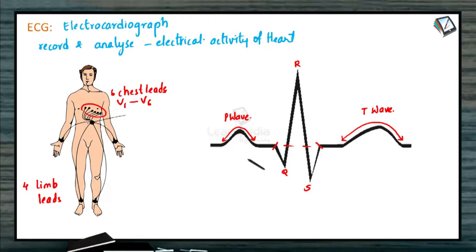So this PR interval, it is from the beginning of the contraction of the atria here and to the beginning of the contraction of the ventricles. So it extends from this region to this region. And it extends from 0.12 to 0.2 seconds.